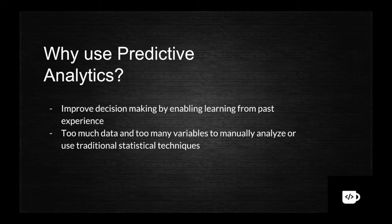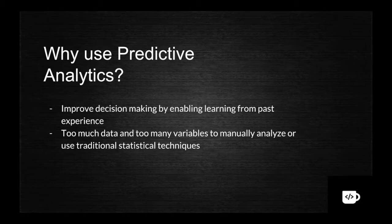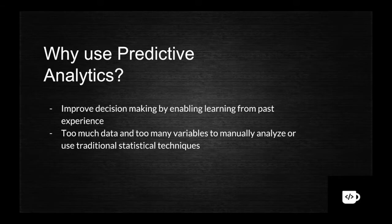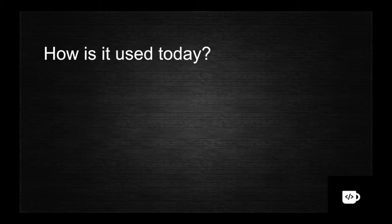Predictive analytics is related to big data because there is too much data and too many variables for us to manually analyze using traditional statistical techniques. As humans, we can process experiences from our own lifetime but we can't remember every instance. When dealing with large datasets we need to analyze all the data across all possibilities, so we need big data technology — because our brain is not a big data system, and neither are normal systems.